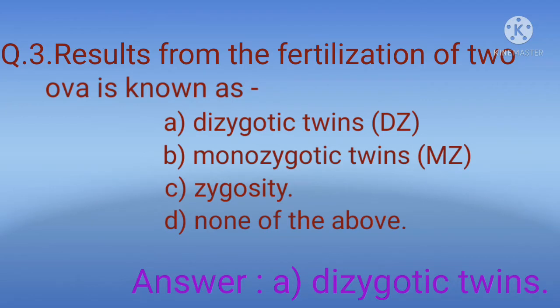Monozygotic twins result from the fertilization of a single ovum. Zygosity refers to the genetic makeup of twin pregnancy.